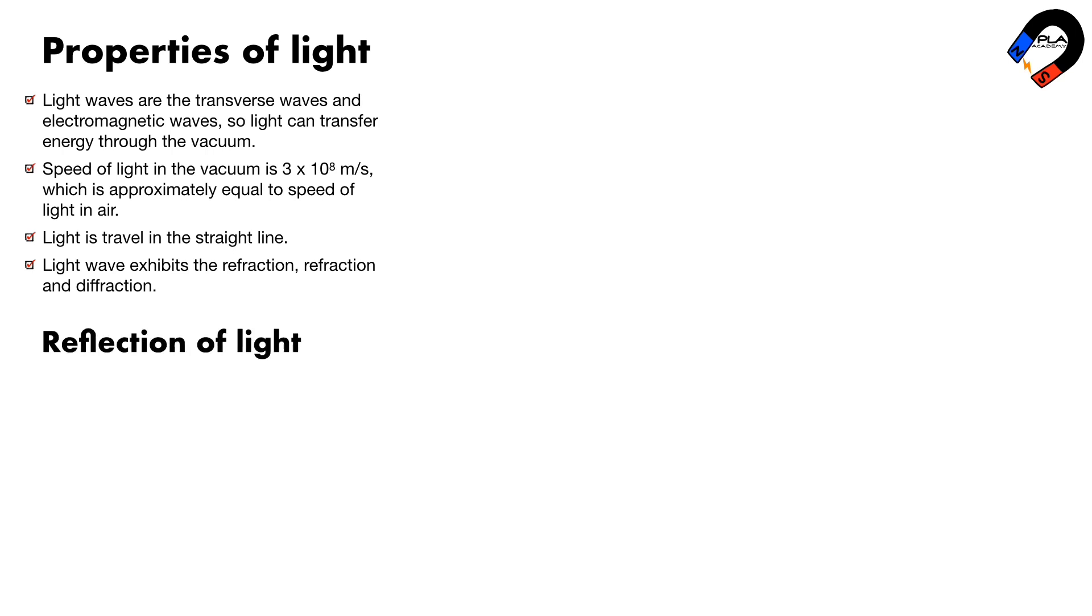Reflection of light. From the previous section 3.1 properties of waves, we know the rules of reflection: the angle of incidence I is equal to the angle of reflection R. The incident ray, reflective ray, and normal lie on the same plane.